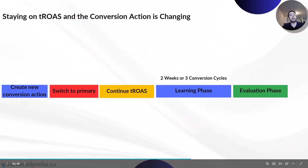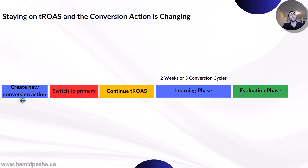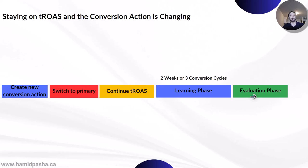This is how the workflow looks like. You create the new conversion action, then you switch the new conversion action to primary. You continue bidding toward target ROAS, you should expect two weeks or three conversion cycles of learning phase, and then you can start evaluating performance.